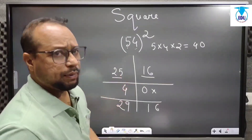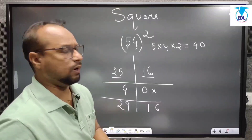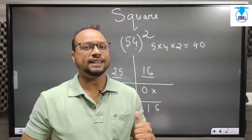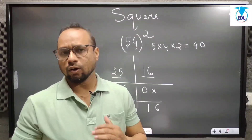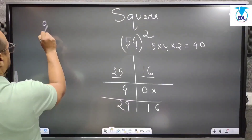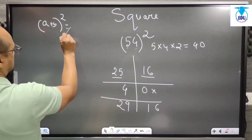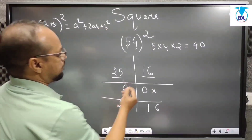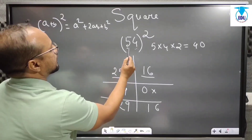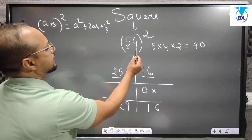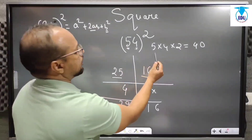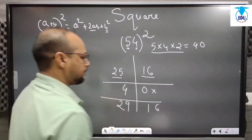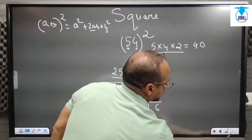The logic behind this trick is a very famous formula — all of you know it. The formula is (a + b) whole square, that is a² + 2ab + b². Basically, we are computing a² by taking the square of 5, b² by taking the square of 4, and 2ab by multiplying these three numbers: 5 into 4 into 2. For more clarity, let's take some more examples.